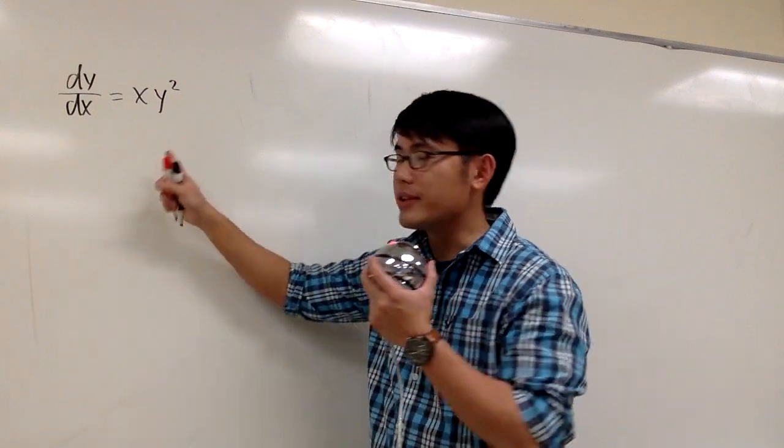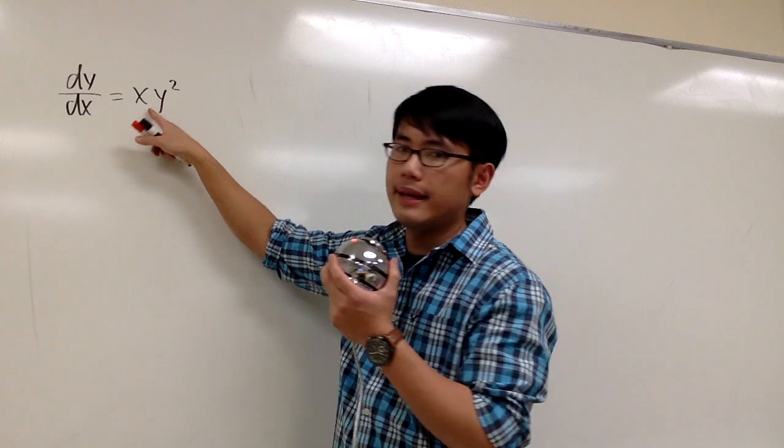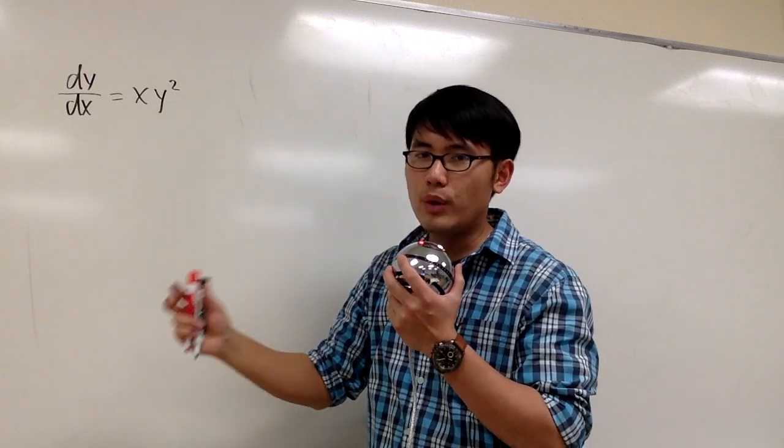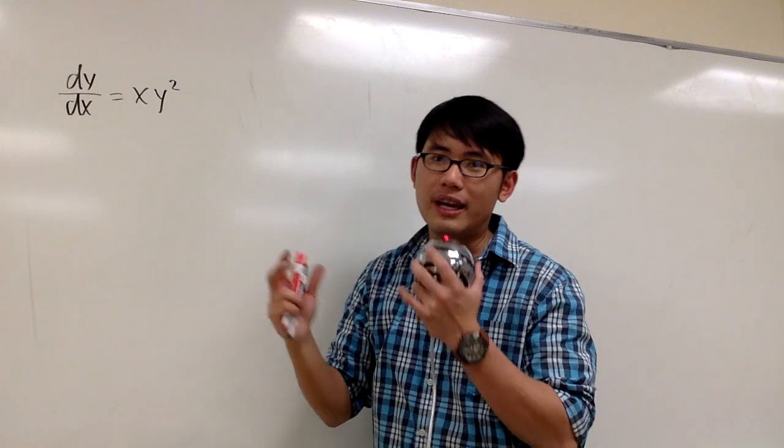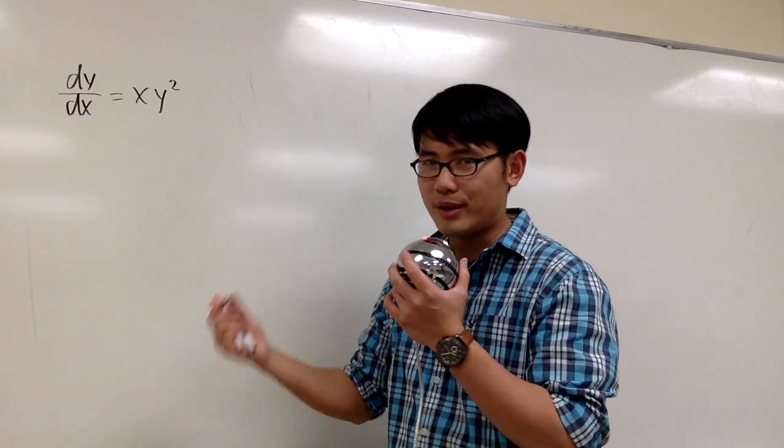Let's solve this differential equation. Let's look at this as dy over dx. This is equal to x times y squared. The strategy is to put all the y and dy together on one side, and then put all the x and dx on the other side, and then we can integrate both sides. This is how we are going to do it.